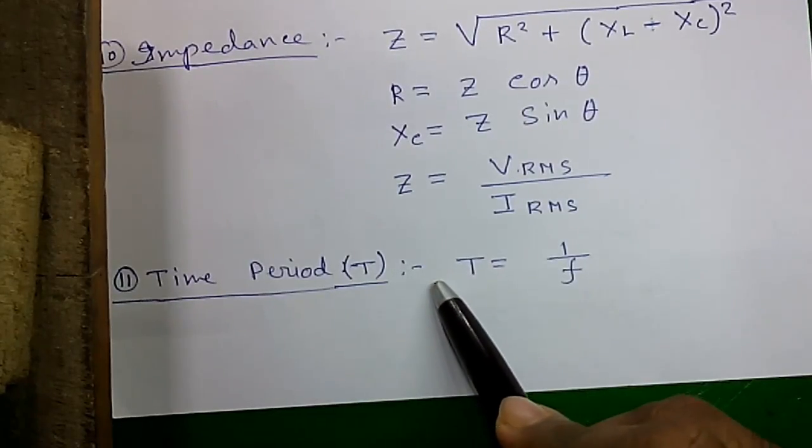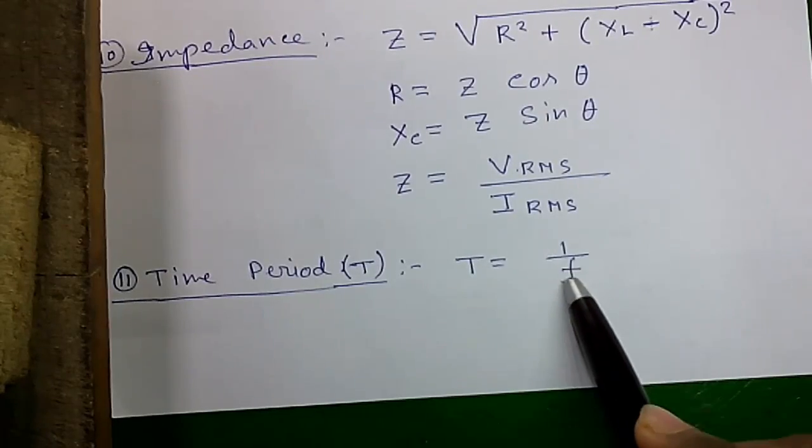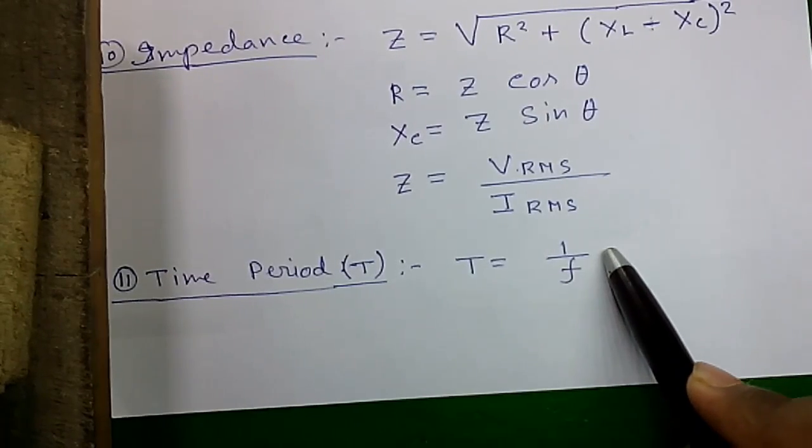Formula number 11, the time period. T equals 1 by F where F is the frequency.